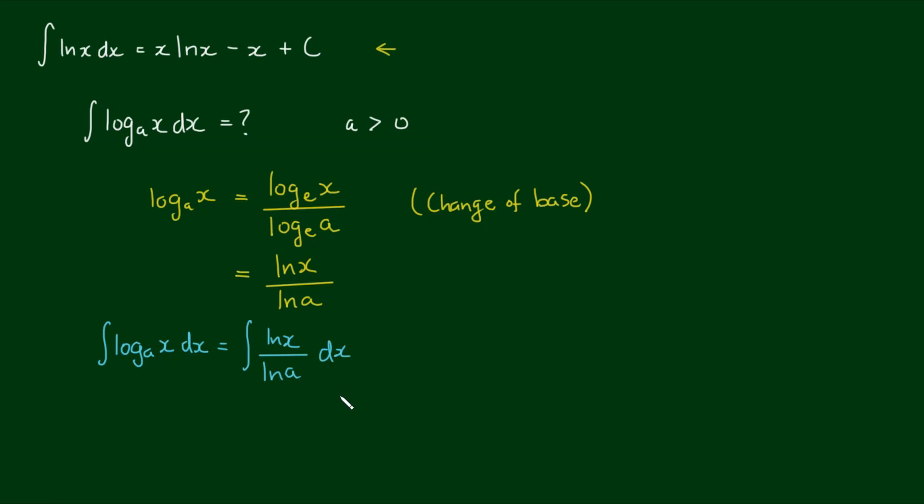Now the natural log of a is simply a constant, so it can come out the front as one over the natural log of a times the integral of the natural log of x dx.